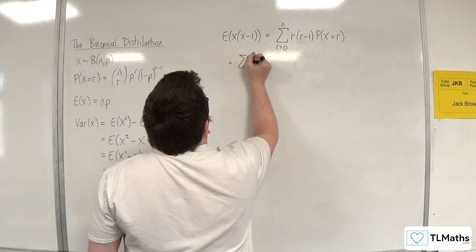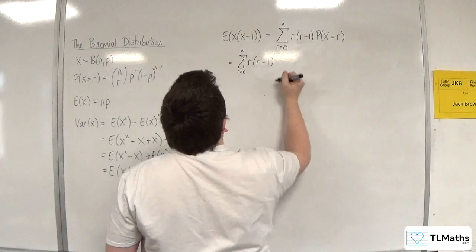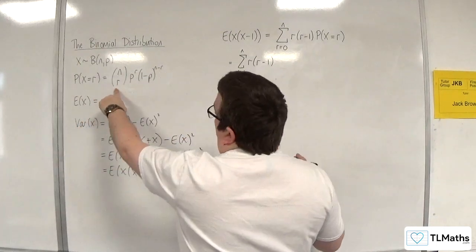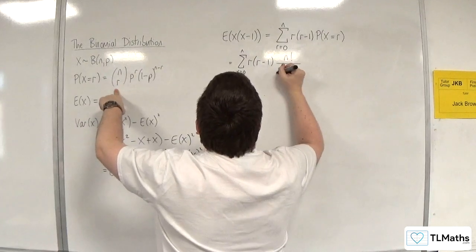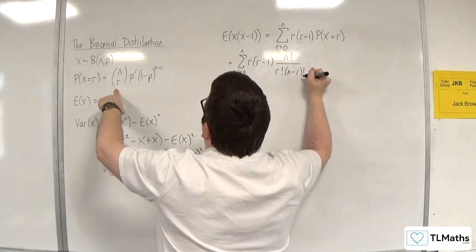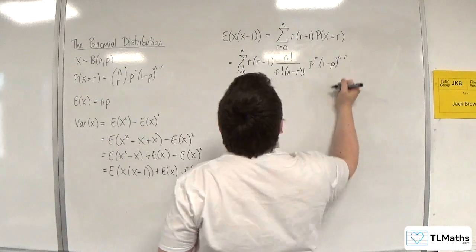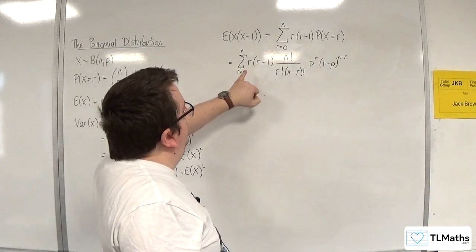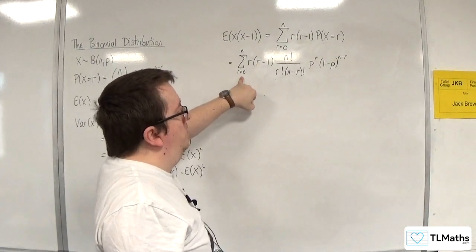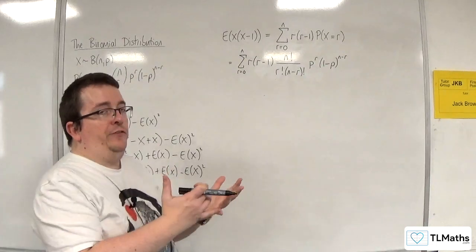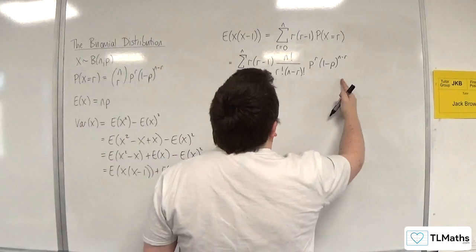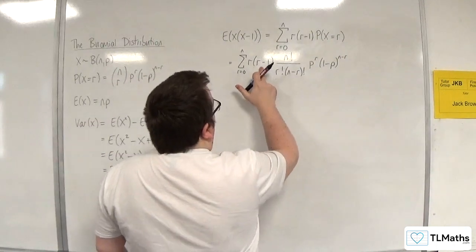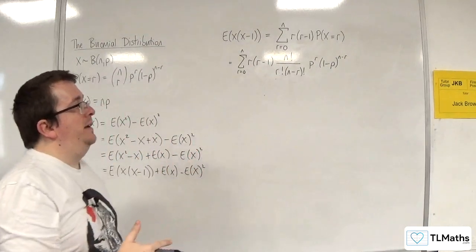So this is the sum from r=0 to n of r(r−1) times — writing out the nCr in factorial notation — n factorial over r factorial times (n−r) factorial, times p to the r times (1−p) to the n−r. Now, if I start at r=0, the first term is going to be 0 times all of that, so it's 0. And when r=1, I'm going to get 0 again. So the first and second terms are both 0.